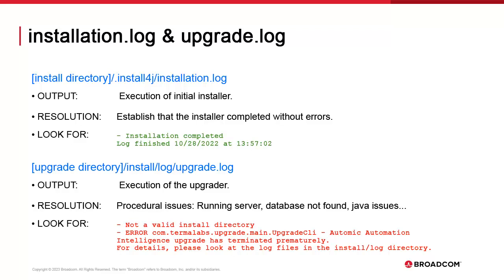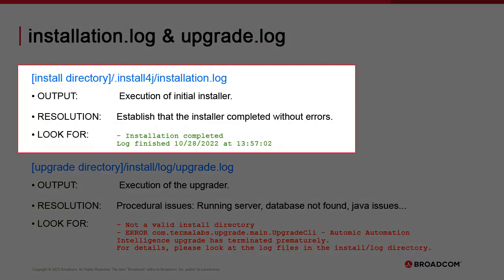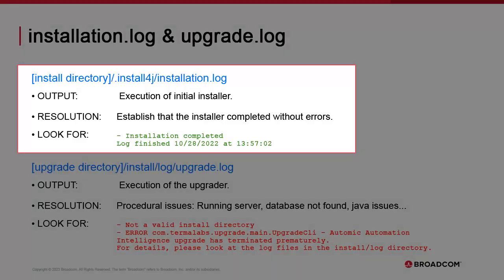Let's start with installation and upgrade. Installation.log is found in the .install4j directory under the directory containing the initial installation elements. It's a technical log that traces each step of the installer, and it's written when you execute the .exe or .sh. Since we execute this step at the beginning of the installation, there are no technical requirements — they're simple executables, meaning you should not run into any problems. You can check this log to make sure that the installation of the server went as planned; look for the string 'completed' at the end.